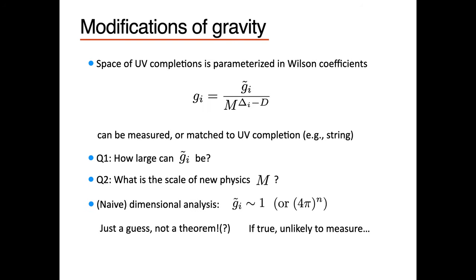The goal of this program is to say something about these Wilson coefficients and find consistency conditions on them. The space of UV completions is parameterized by these Wilson coefficients, which are suppressed by some high energy scale, with some dimensionless coefficient. These coefficients can be measured in an experiment or matched to a UV completion — for instance, string theory has very particular values for these coefficients.